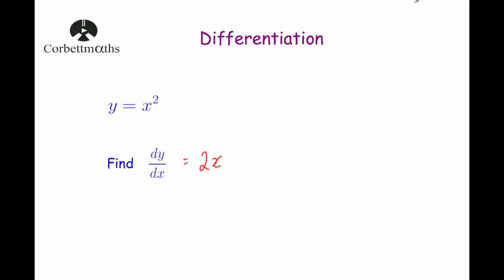So whenever we differentiate, we bring the power down — giving 2x — and then reduce the power by 1. So if we're given y equals x squared, dy by dx, or the gradient function, would be 2x.